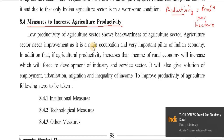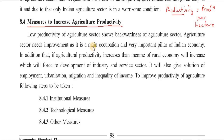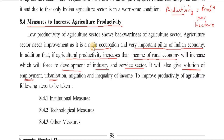We know that the agricultural sector is the main occupation and a very important pillar of the Indian economy. If agriculture income and production increase, then agriculture productivity will increase, rural population's income will rise, and from that, industry and service sectors will get capital. At the same time, it will provide a solution for employment, urbanization, migration, and inequality of income — these are India's burning problems.